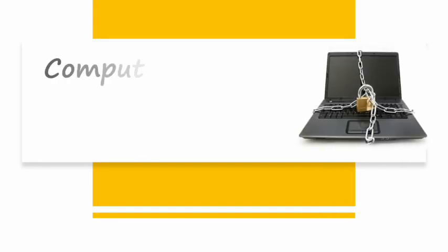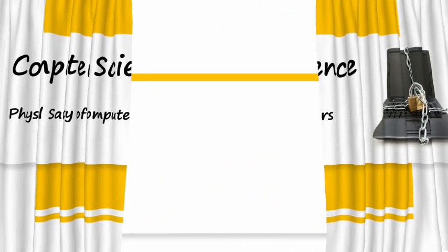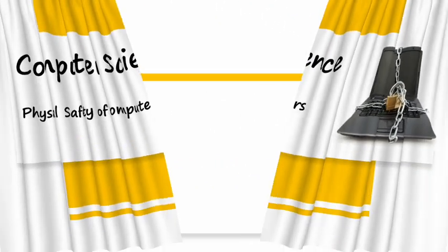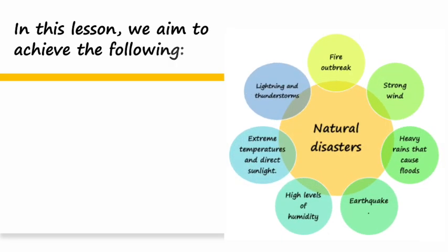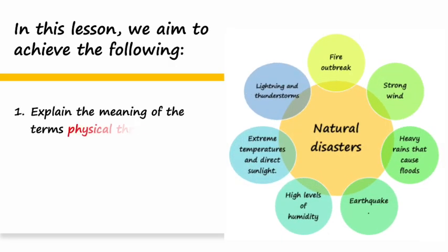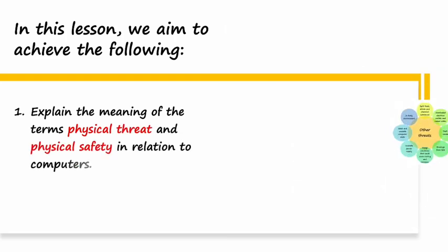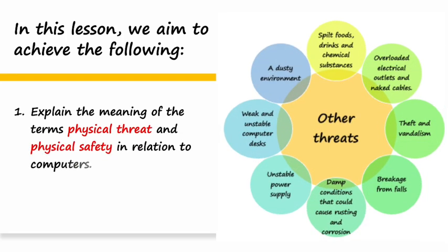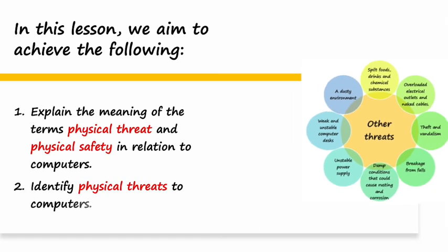We present computer science. In this lesson, we will discuss the physical safety of computers. We aim to achieve the following: one, explain the meaning of the terms physical threat and physical safety in relation to computers; two, identify physical threats to computers.